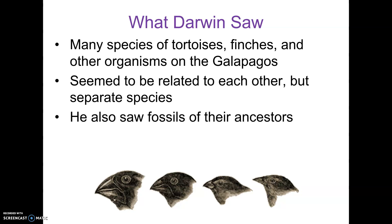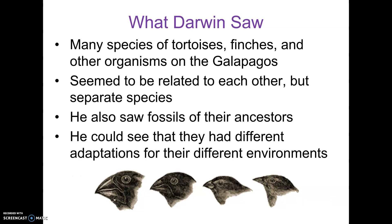He actually found fossils in the sedimentary rock cliff sides, and he could see fossils of tortoises, for example, that no longer existed on the islands, but looked very similar to the ones that did exist — not exactly the same, almost like the older species had become extinct and the newer species that existed today was similar but not exactly the same. He also noticed that these organisms had adaptations that helped them survive in their different environments. Some finches lived in the forest, some lived in the cliffs, some lived on the beach, and the ones in the forest had different beaks than the ones on the beach because they ate different food.